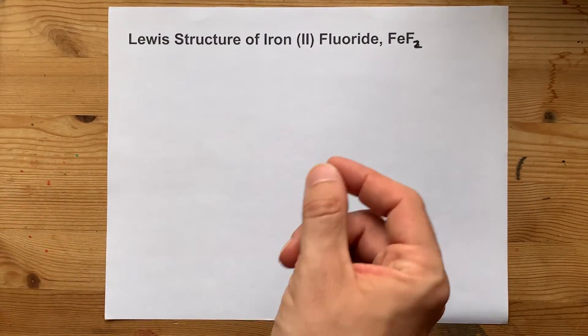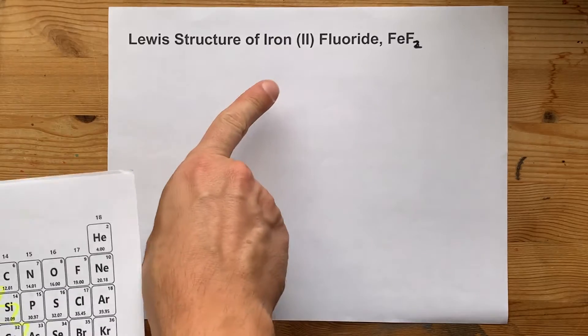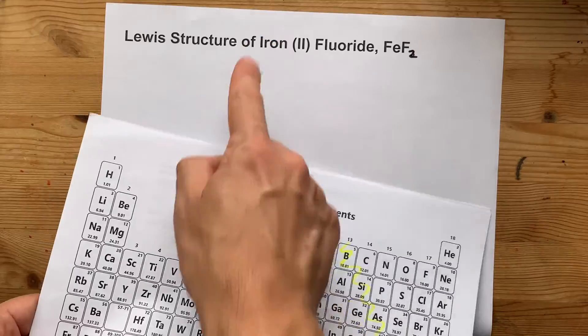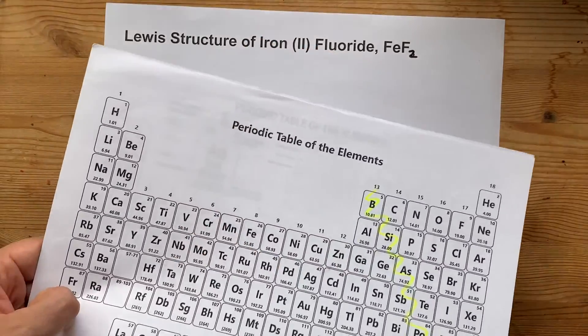Ionic compounds are when one thing, the metal, gives its electrons away to the non-metal and gets a positive charge, giving the non-metal a negative charge.